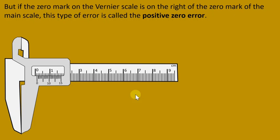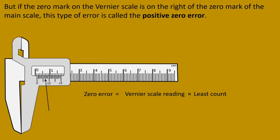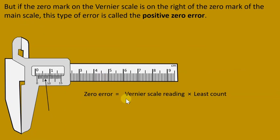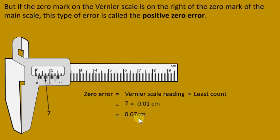Using the same formula — zero error = Vernier scale reading × least count — we read the Vernier scale. Counting from zero: one, two, three, four, five, six, seven. The Vernier scale reading is 7. So: zero error = 7 × 0.01 cm = 0.07 cm.